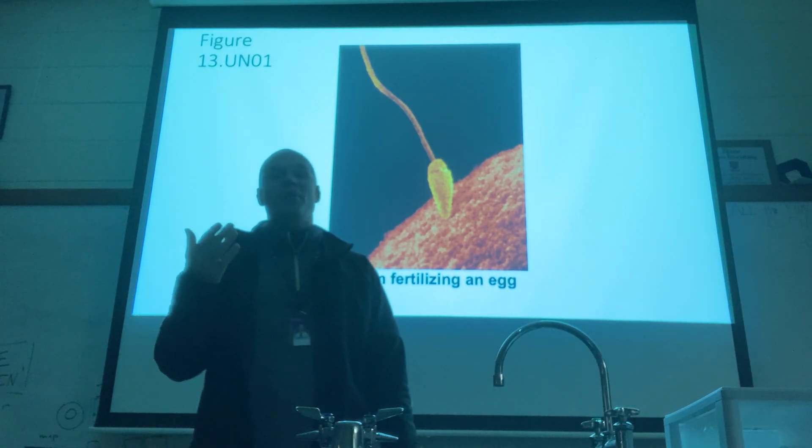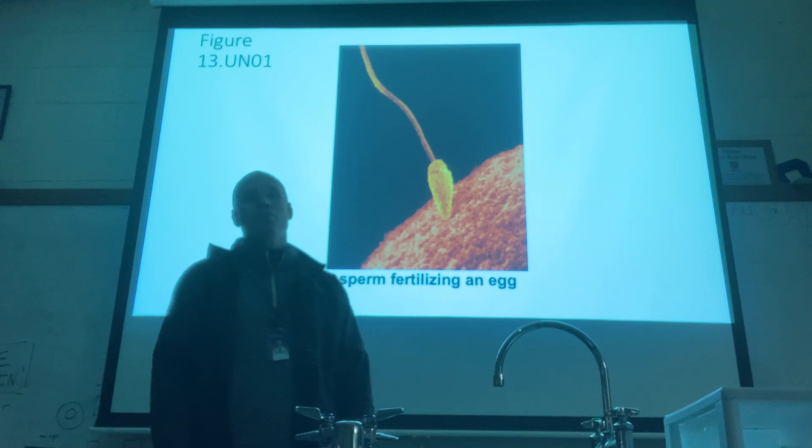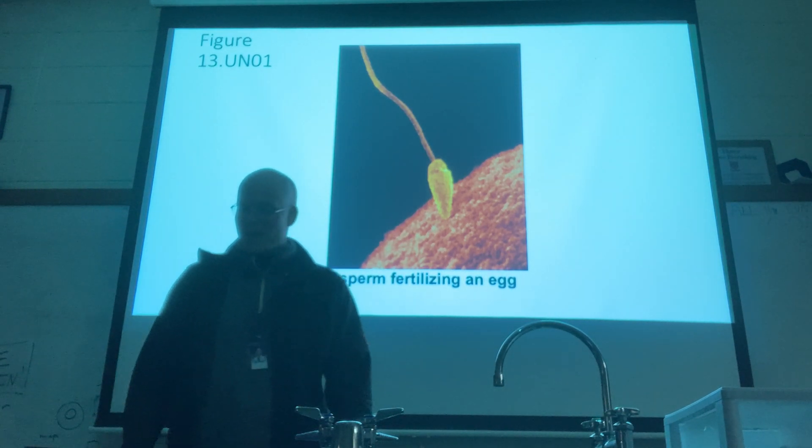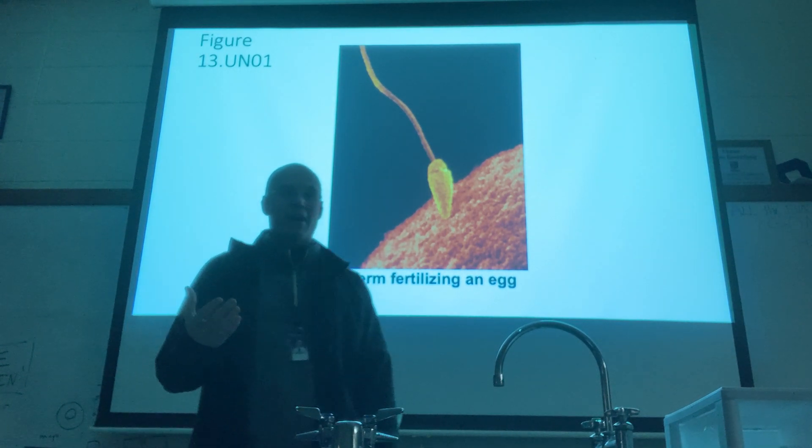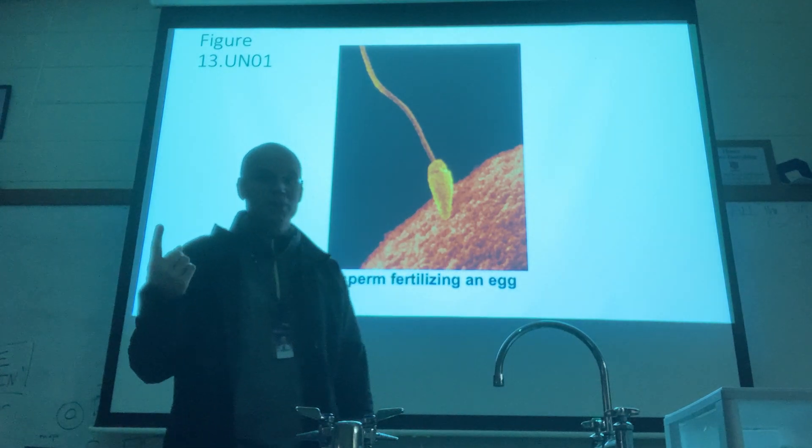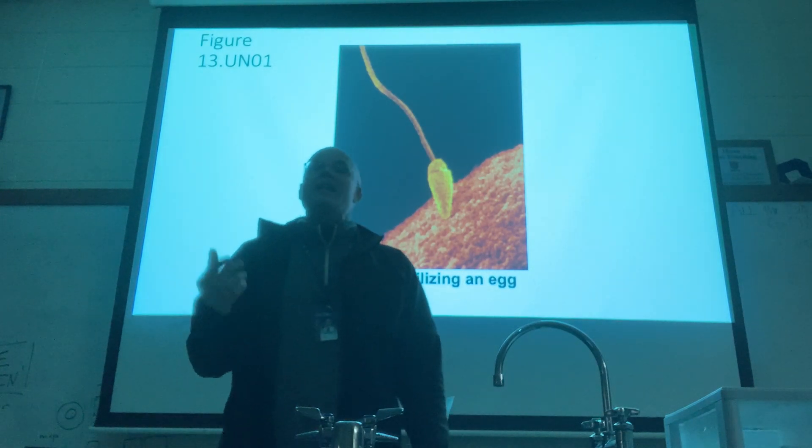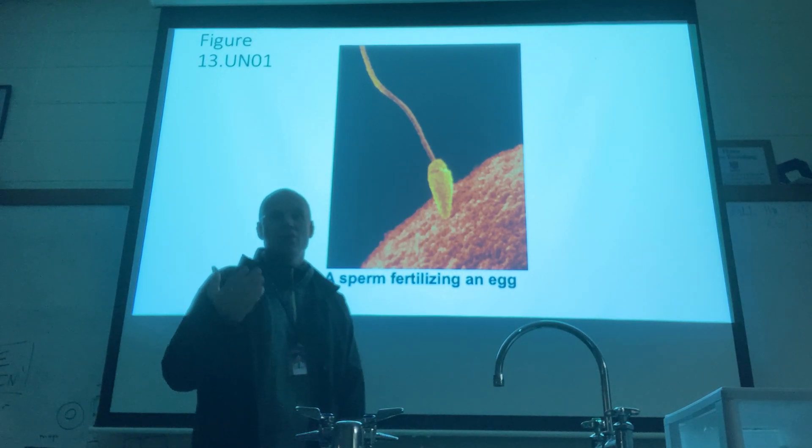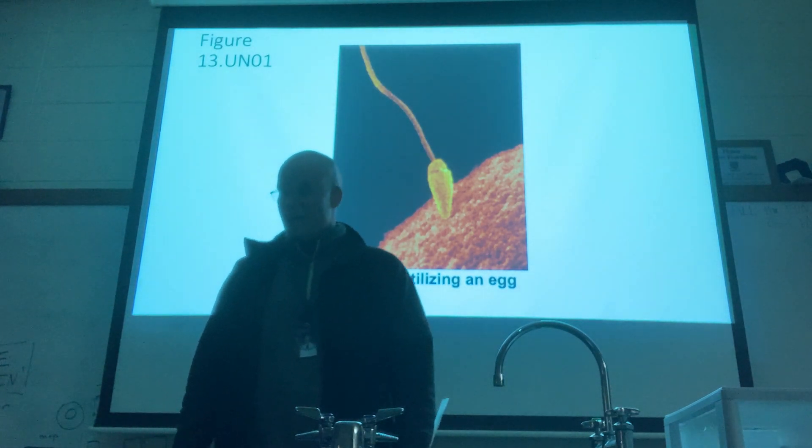If you have asexual reproduction in eukaryotes, that will happen through mitosis and cytokinesis, which is a topic that we spent some time on at the end of last semester. So those are the two ways in which reproduction can happen: asexual, which does not include gametes, or sexual reproduction, which involves the fusion of two gametes or sex cells, typically sperm and egg cells.